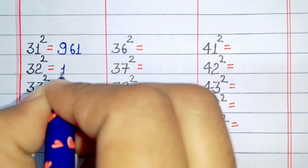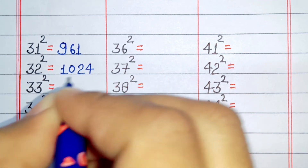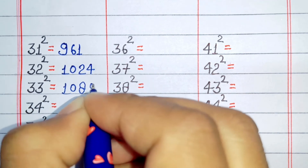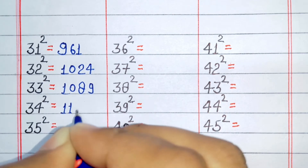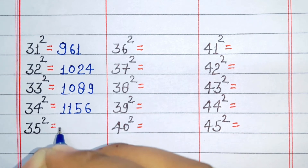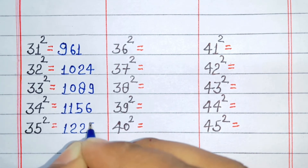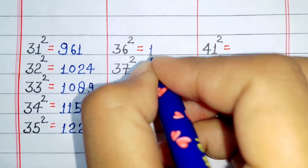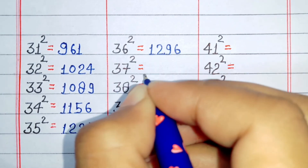Square of 31 is 961. Square of 32 is 1024. Square of 33 is 1089. Square of 34 is 1156. Square of 35 is 1226.